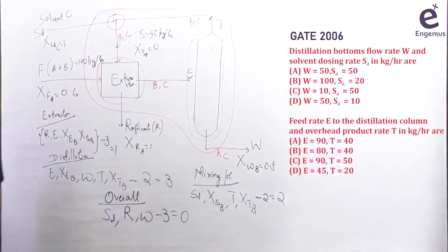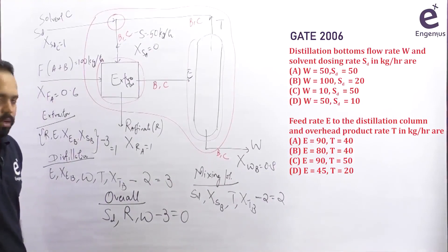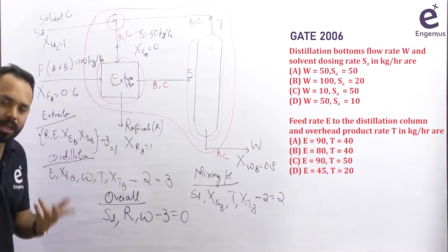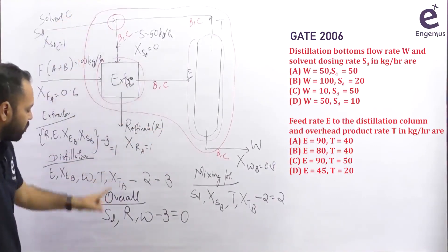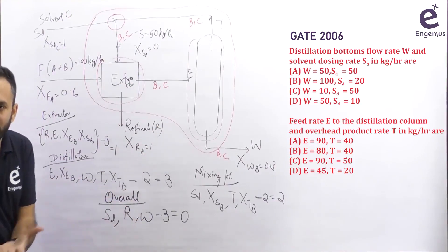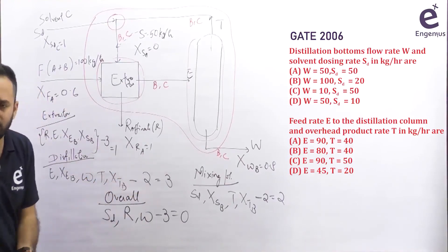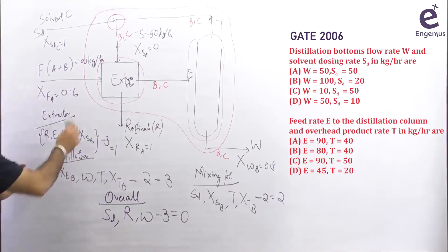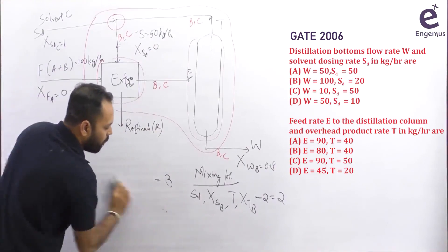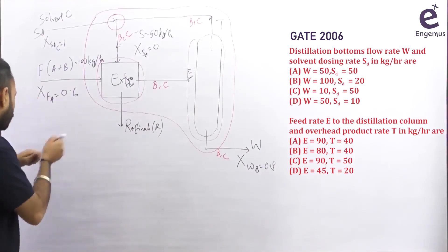The first question asks for the distillate bottom flow rate W and solvent dosing SD in kg per hour. SD and W are the unknowns for the overall system, so we write the balance on the overall system. We also know that for the overall system the degree of freedom is zero, so there is no other option. Let's write the balance for the overall system — three equations.